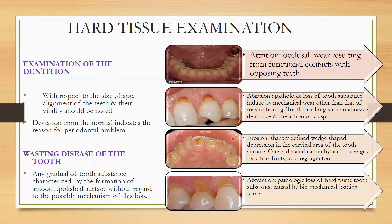Next, coming to erosion: sharply defined, wedge-shaped depression on the cervical area of the tooth surface. The main cause is decalcification by acid beverages, citric foods, and acid regurgitation. So this erosion can happen.